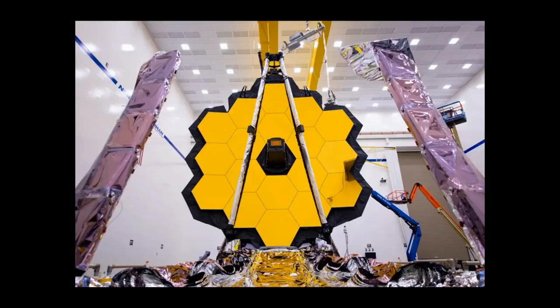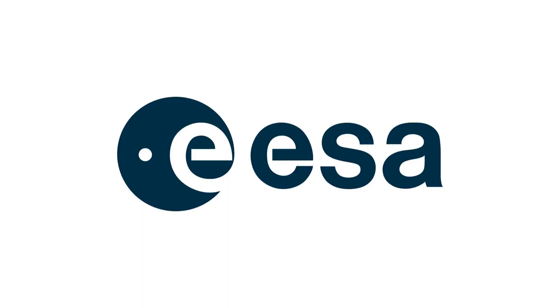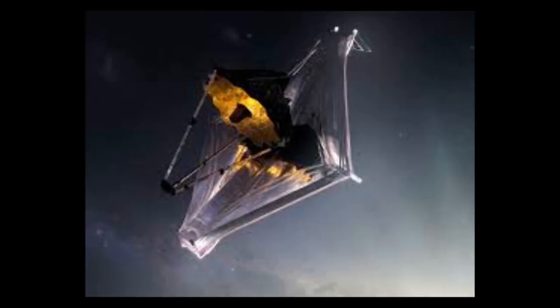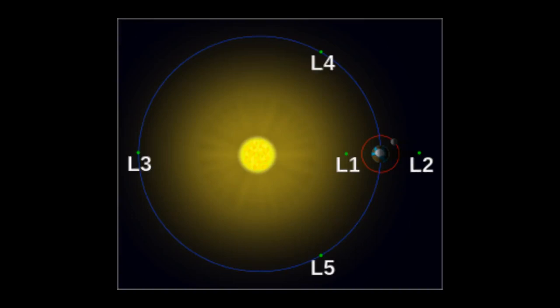The development of JWST was led by NASA in collaboration with the European Space Agency and the Canadian Space Agency. The JWST was developed primarily to conduct infrared astronomy. It is deployed in the solar orbit of L2 Lagrange Point, about 1.5 million kilometers from Earth.